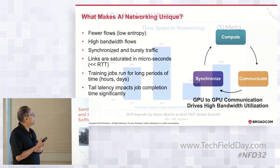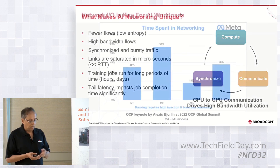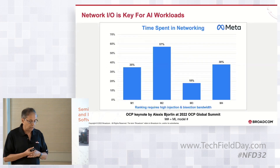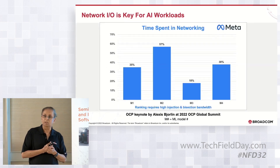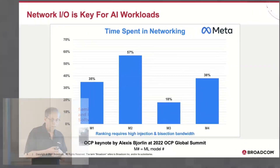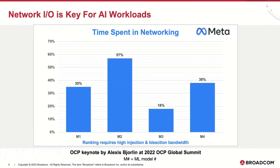Networking is a key element. A chart presented at the OCP Global Summit shows where time is spent in networking for recommendation models (DLRM). For various benchmark models, it shows the amount of time spent in networking — in one model, north of 50% was spent in networking, meaning the compute is waiting for the network to deliver the data. The longer the network is in the way, the more training performance is impacted.